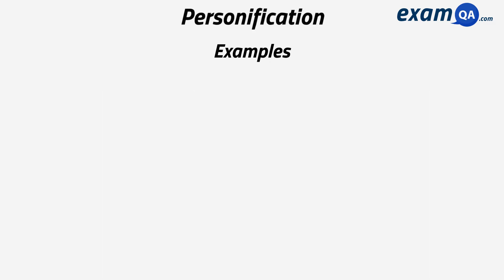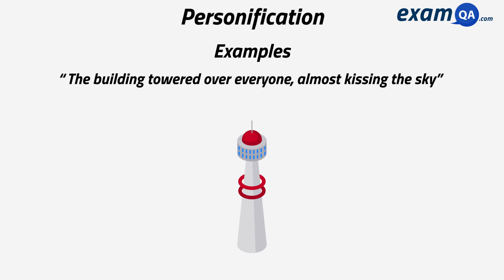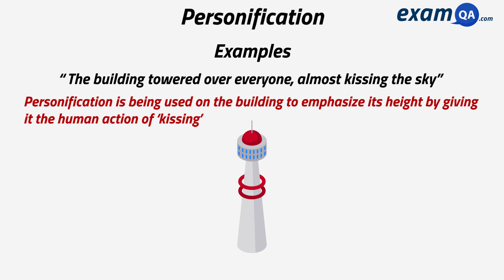An example of this would be: 'The building towered over everyone, almost kissing the sky.' This is an example of personification as a building cannot literally kiss the sky. Kissing is a human action, so here a human action is being used to describe the building.